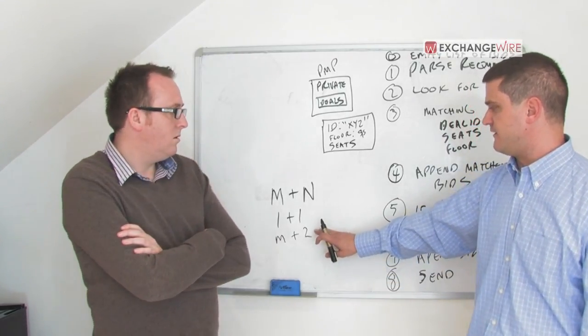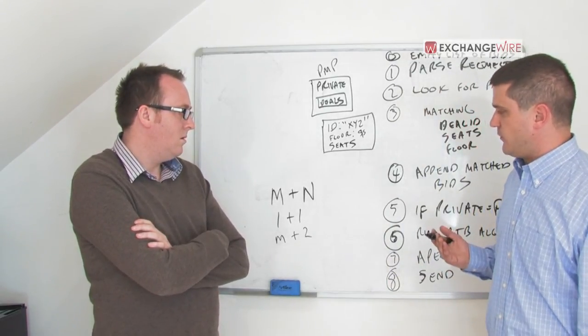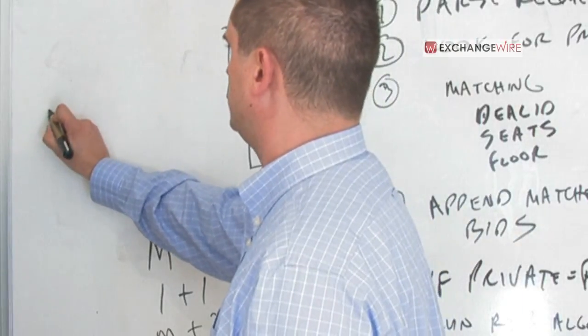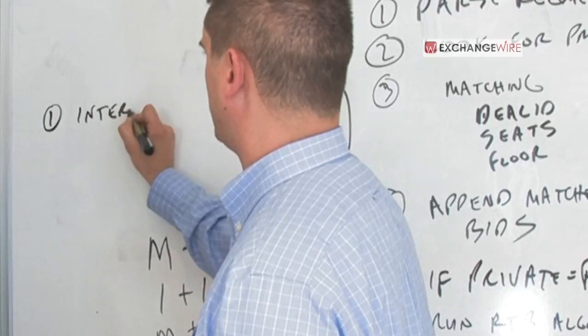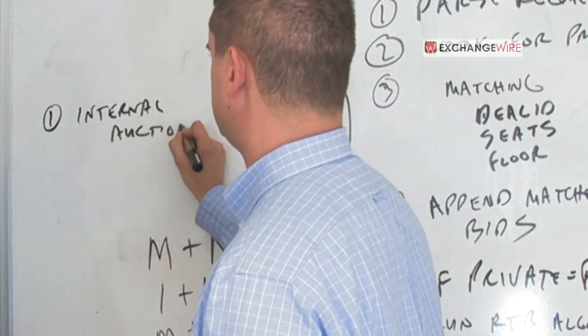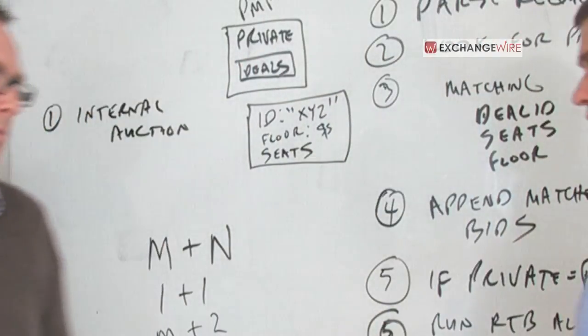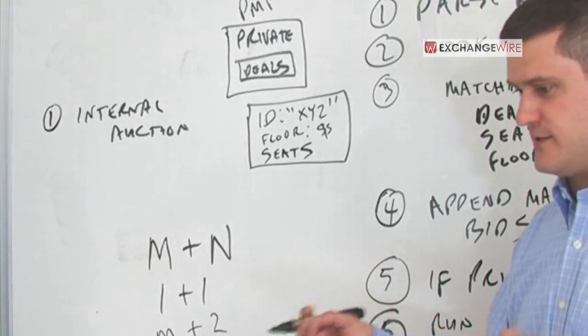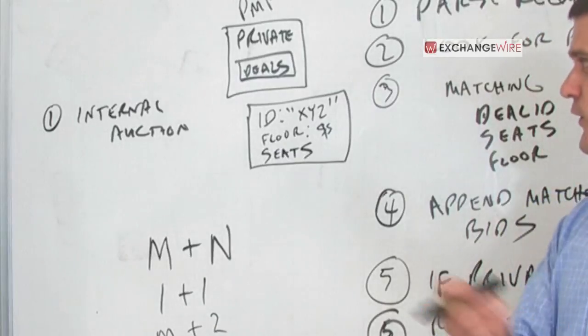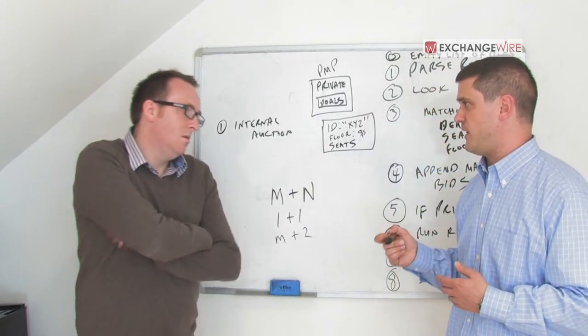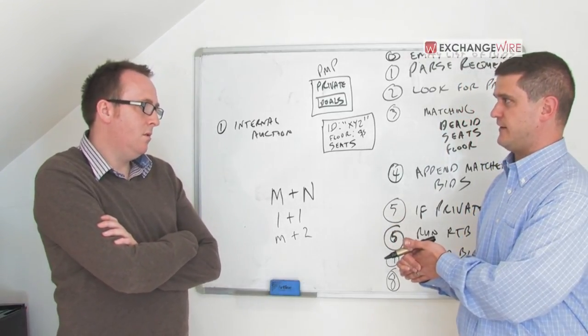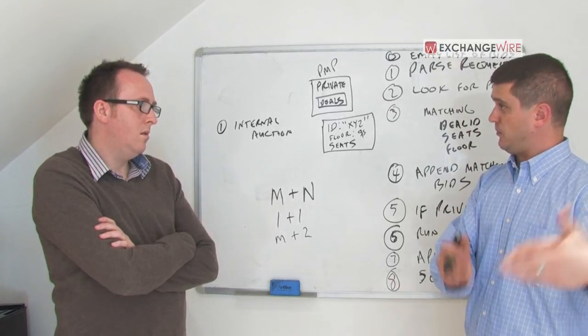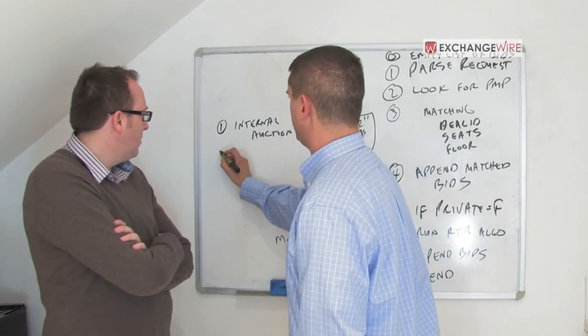So we've discovered some anti patterns in the software that get in the way. You know, the first one is running an internal auction. Internal auction on the DSP side. As soon as you talk about deal ID based bidding, the implication is that what the buyer and the seller have intended is for the bids to come across. So if you're subjecting all of the bids to an internal auction on price, you may be suppressing the deal ID bids in favor of open marketplace bids. Even though the exchange has every intention of essentially possibly prioritizing those bids. So internal auction is one issue.